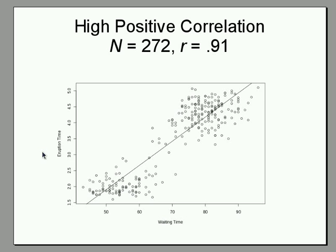The maximum negative correlation, by the way, is negative 1. And we have 272 data points here.